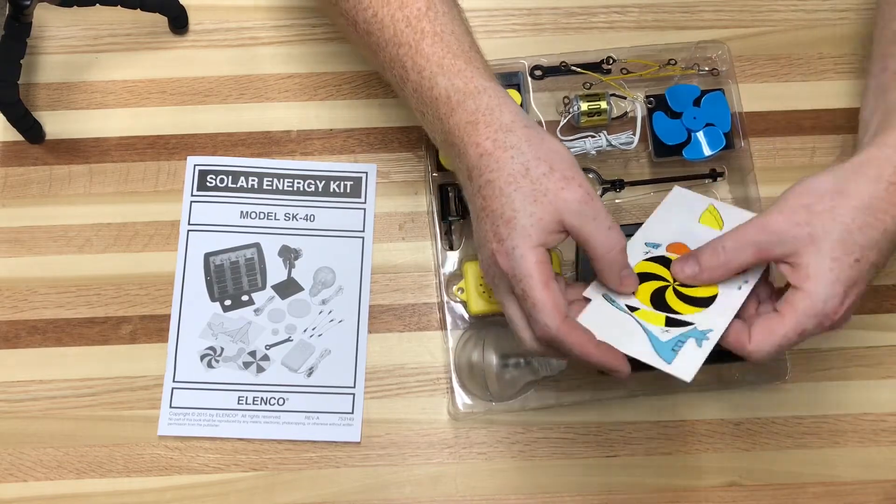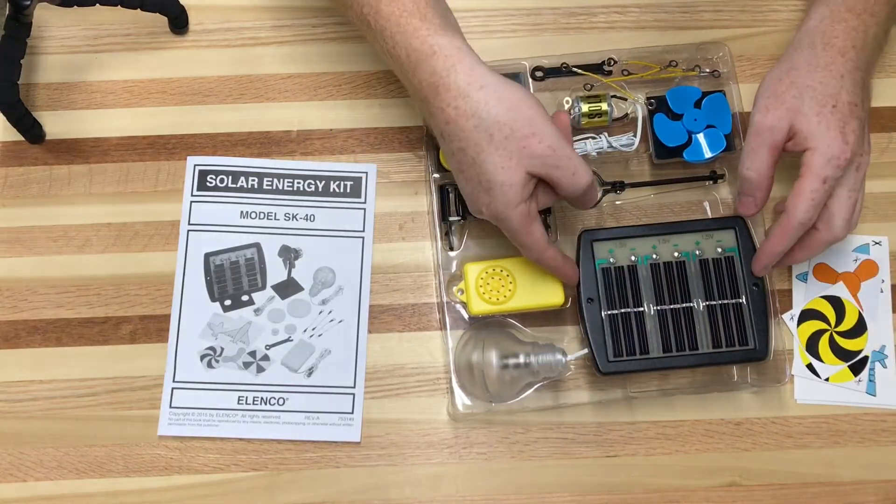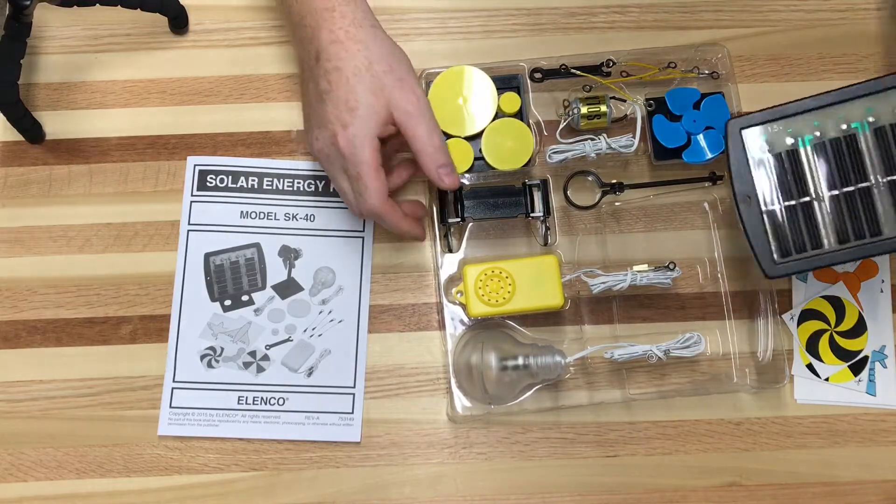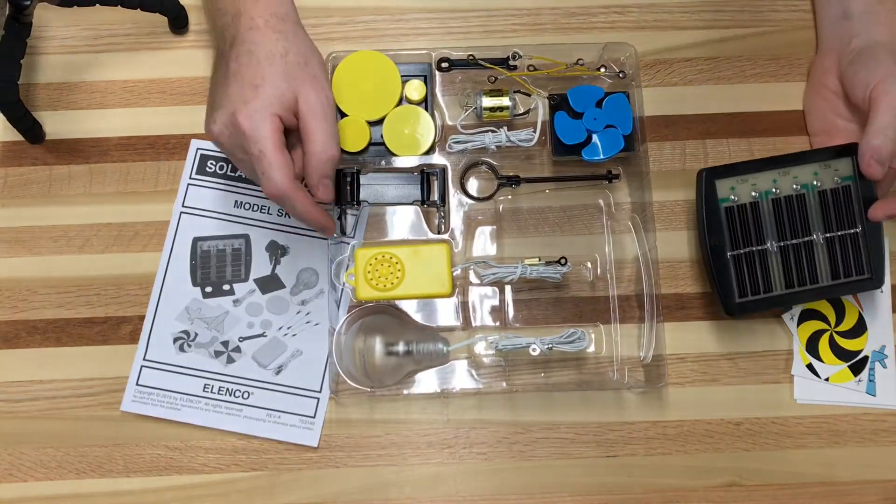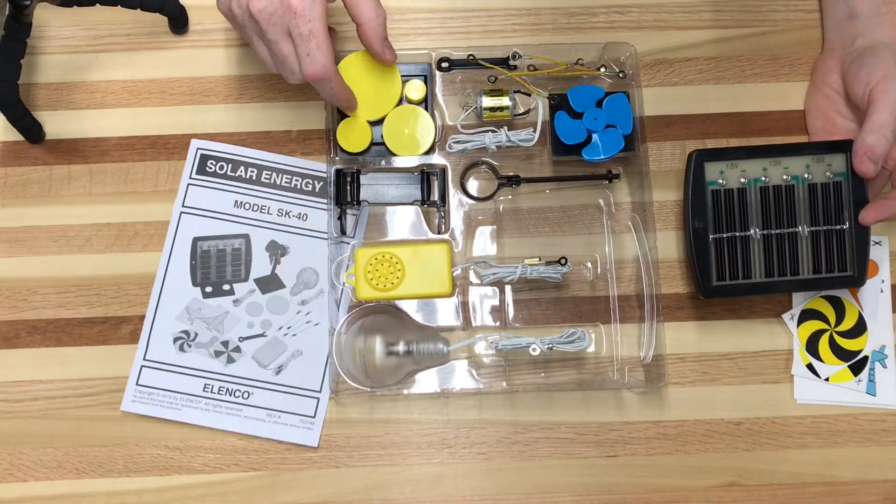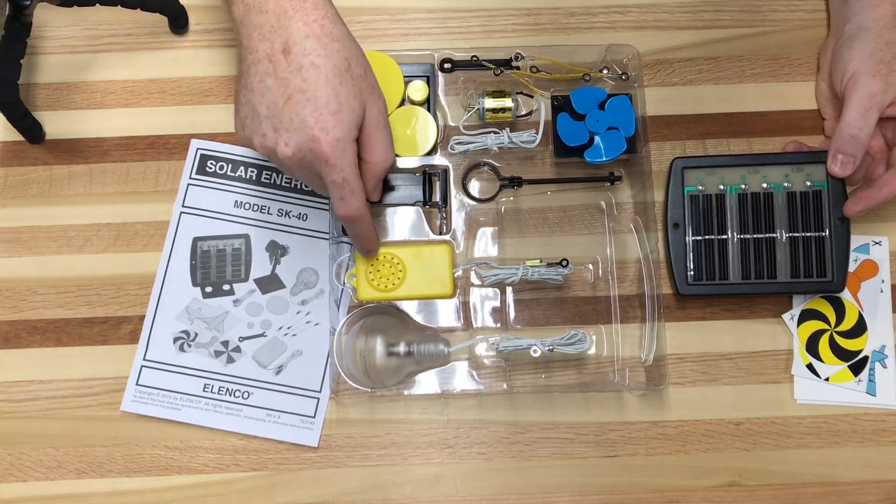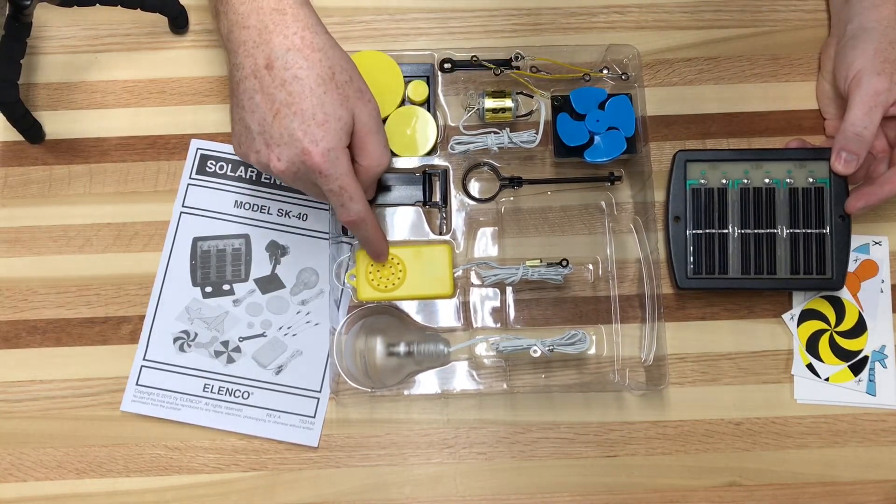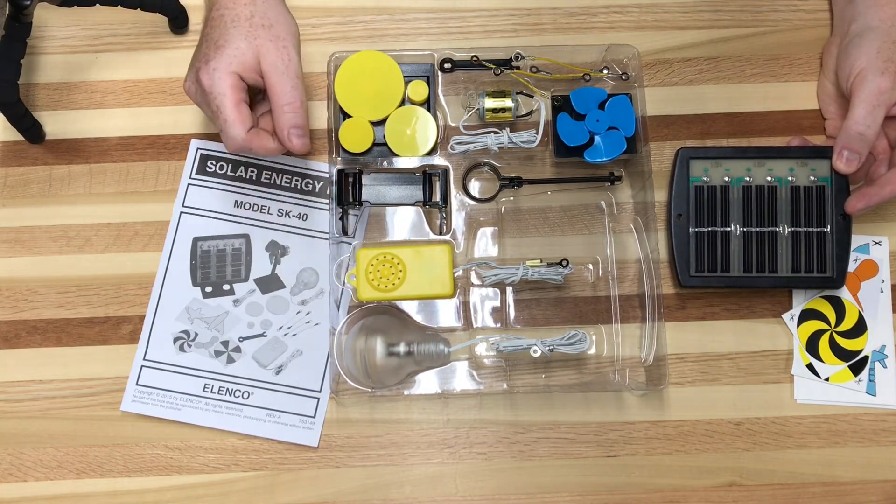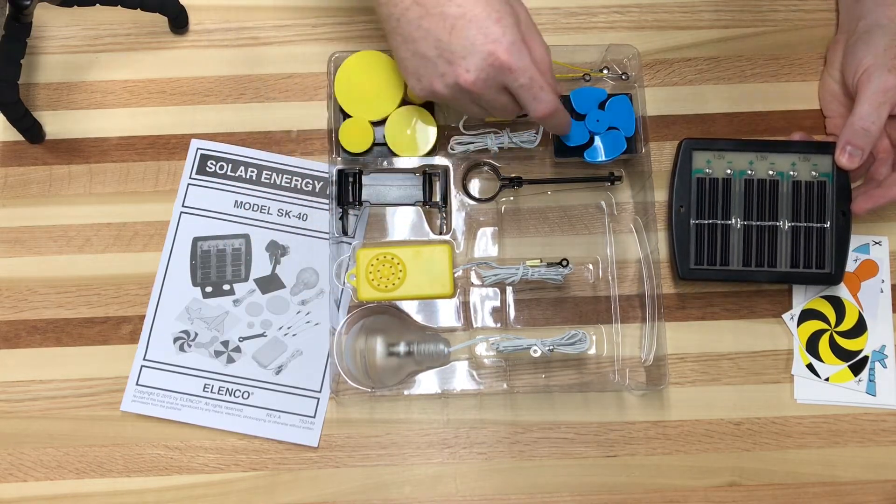Not sure what the cardboard is for, but we'll take a look at that. Solar panel, as well as a whole bunch of different objects to power with the solar panel. There's an electric motor, some sort of buzzer, a light that looks like an Edison light bulb which I think is funny, and a couple of fan blades and discs for the electric motor.